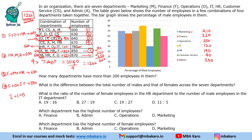The key approach was: add all combinations to get four times the total of all seven departments, then solve systematically using the complement method for each department. No need to calculate male and female breakdowns unless specifically asked. The first question asks how many departments have more than 200 employees - the answer is four such departments.